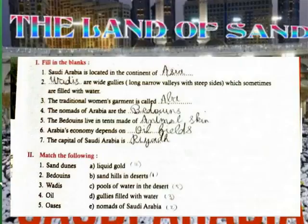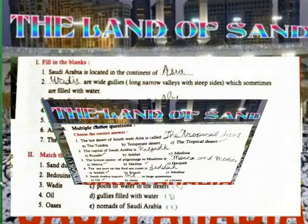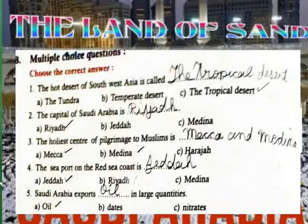Match the following: Sand dune — sand dunes in deserts. Bedouins — nomads of Saudi Arabia. Wadis — gullies filled with water. Oil — liquid gold. Oasis — pools of water in the desert.